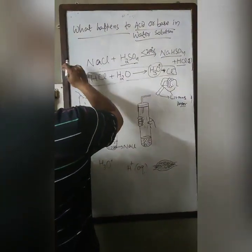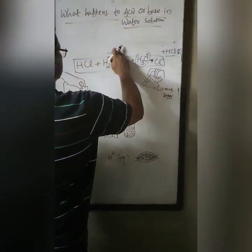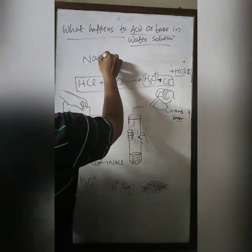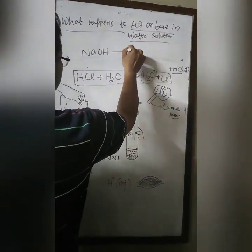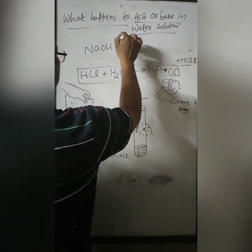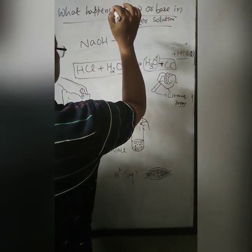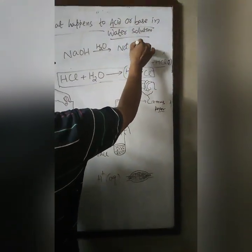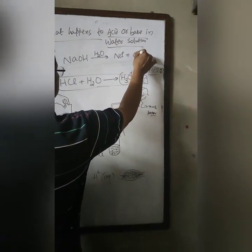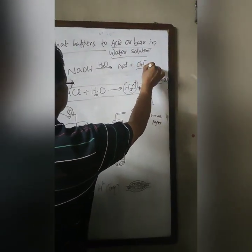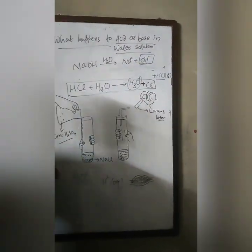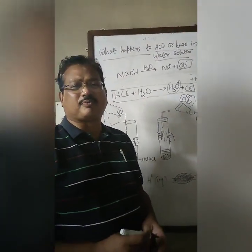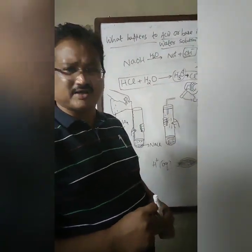Similarly, if you take a base like sodium hydroxide and it comes in contact with water, it produces Na⁺ and OH⁻. This OH⁻ ion is responsible for the basic properties of the base.